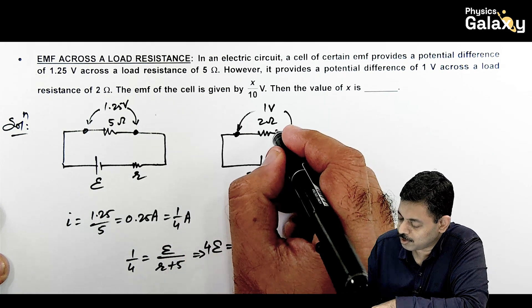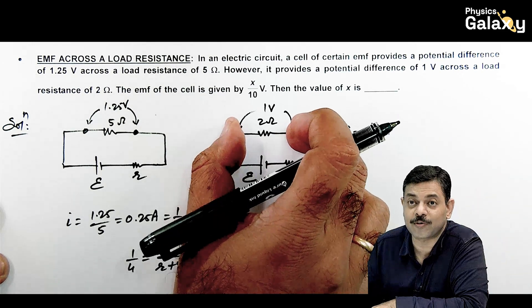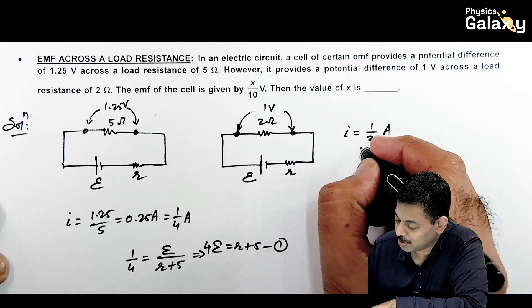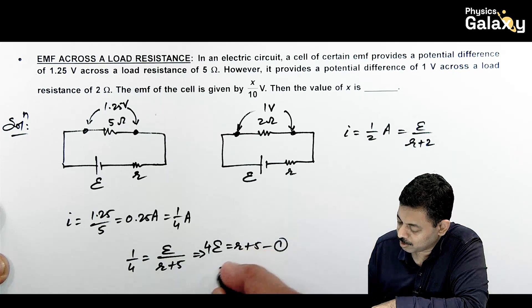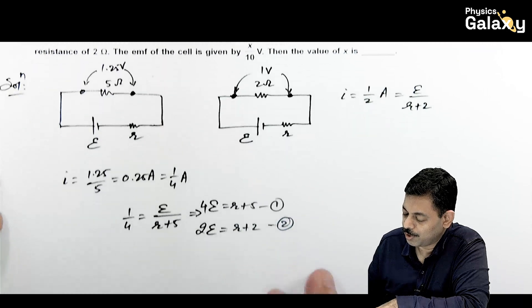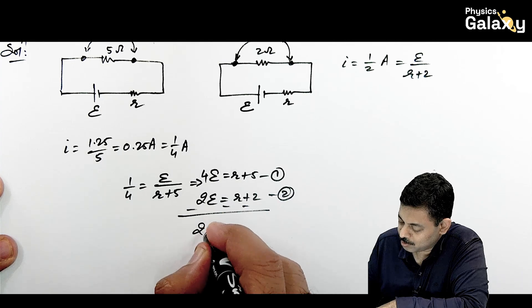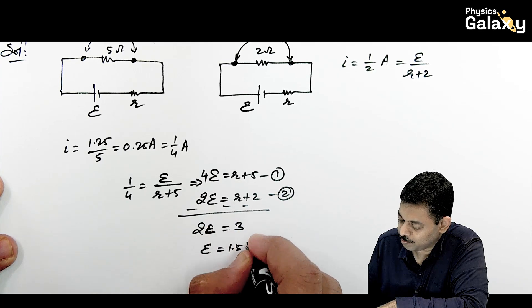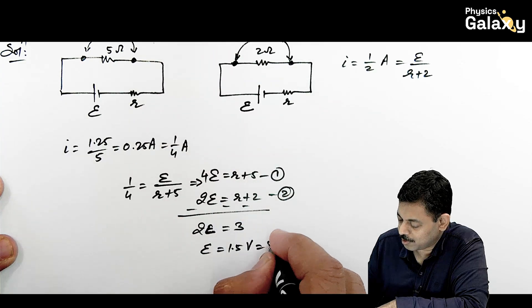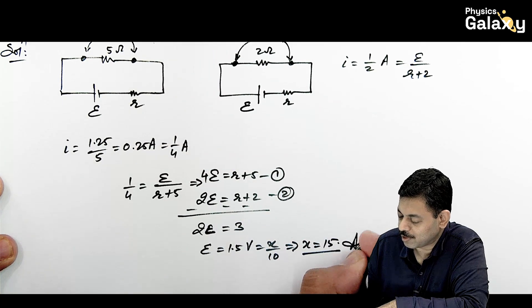For the second condition, current = 1/2 A across 2 ohm. So e/(r + 2) = 1/2, giving 2e = r + 2 — this is equation 2. Subtracting equation 2 from equation 1: 2e = 3, so e = 1.5 volt. Since e = x/10, the value of x is 15.